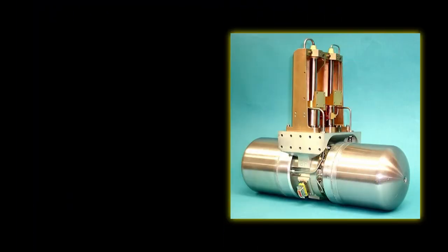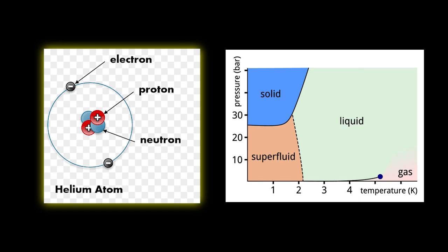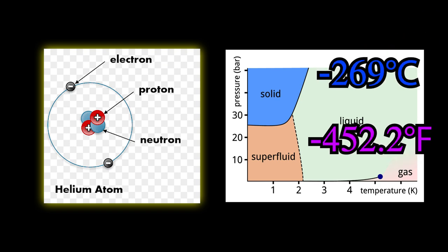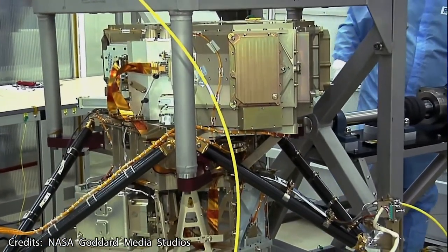Moreover, unlike your household refrigerator, this one uses helium gas as a refrigerant because helium has the lowest boiling and melting point of all the known elements, just shy of minus 269 degrees Celsius, which is a little bit colder than what MIRI needs, making it the perfect coolant.